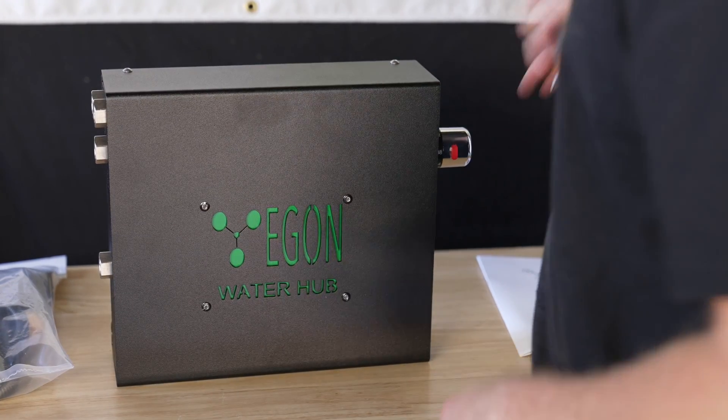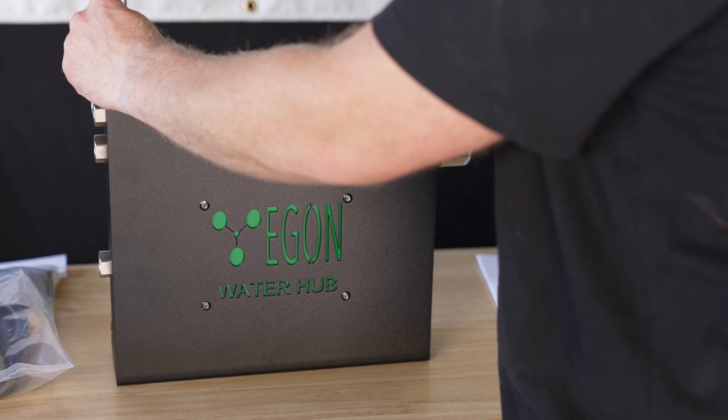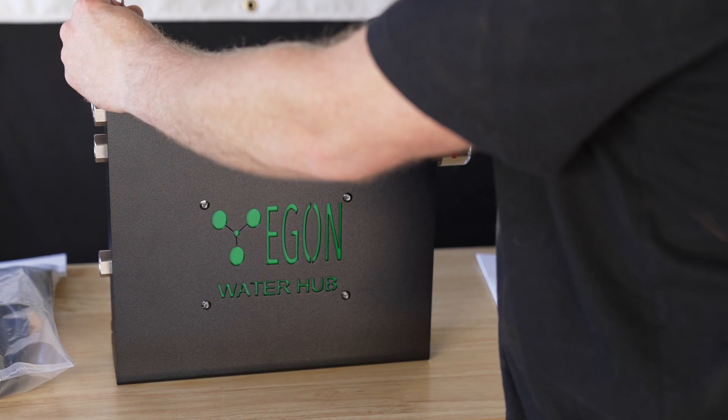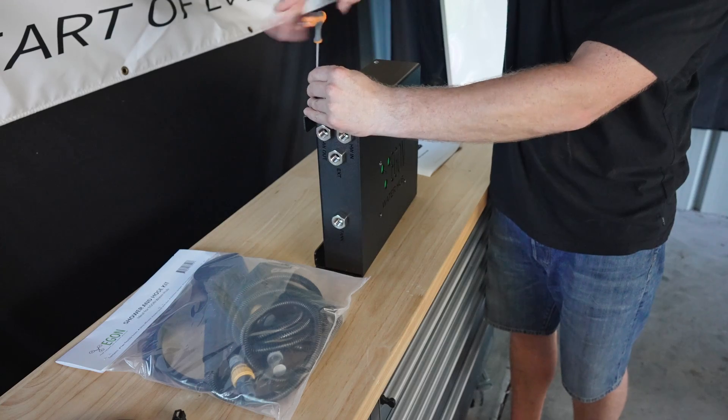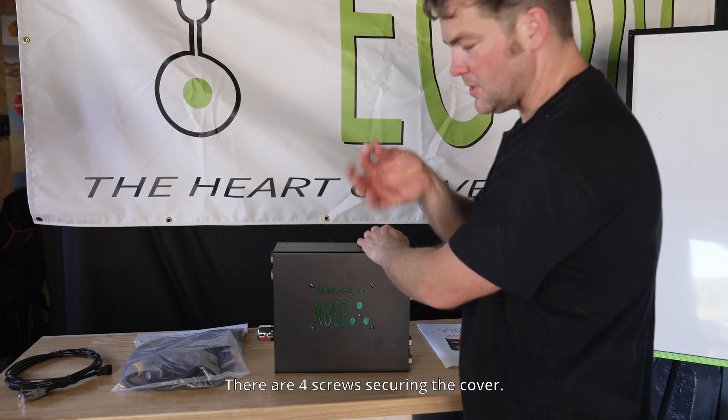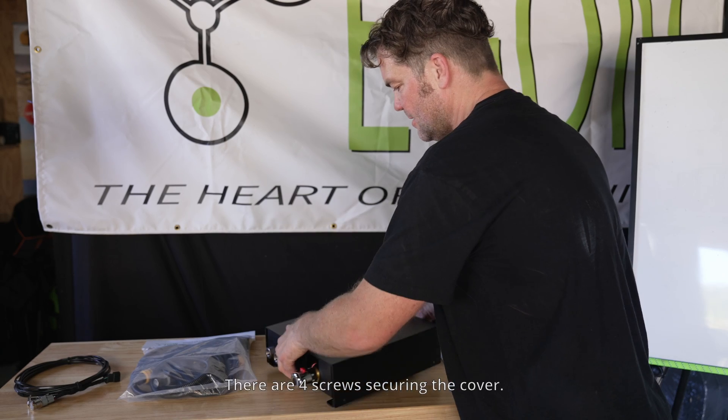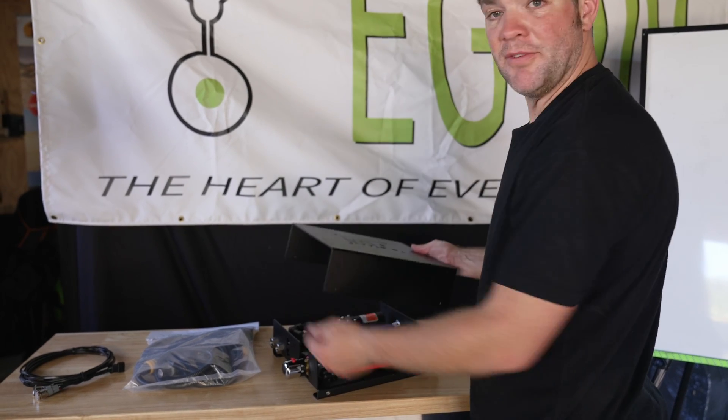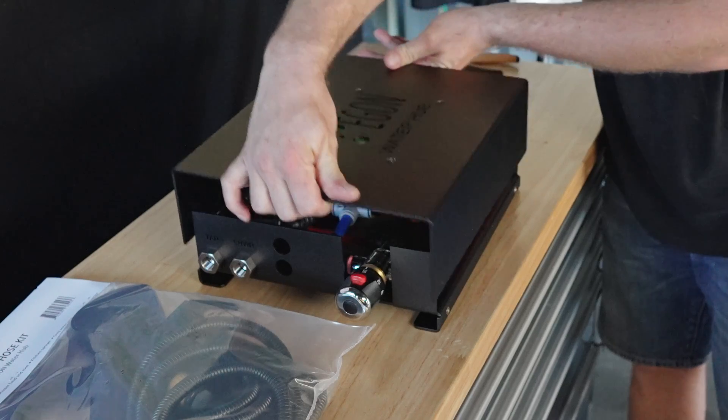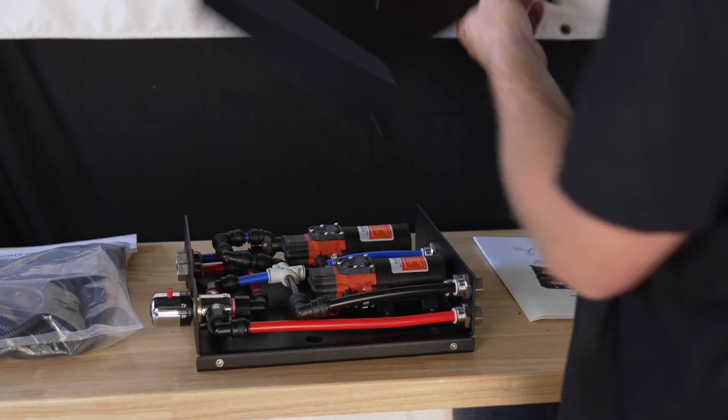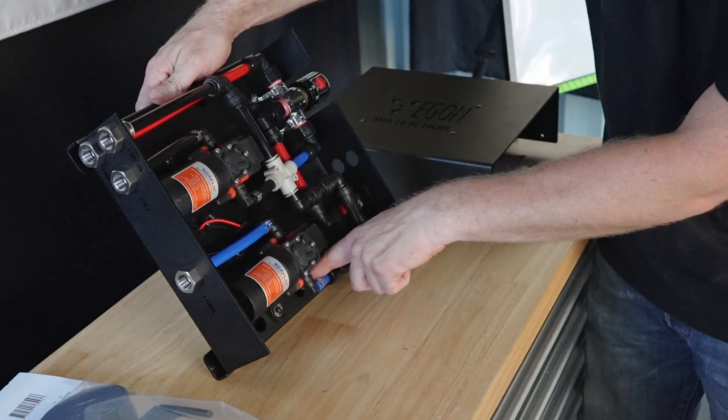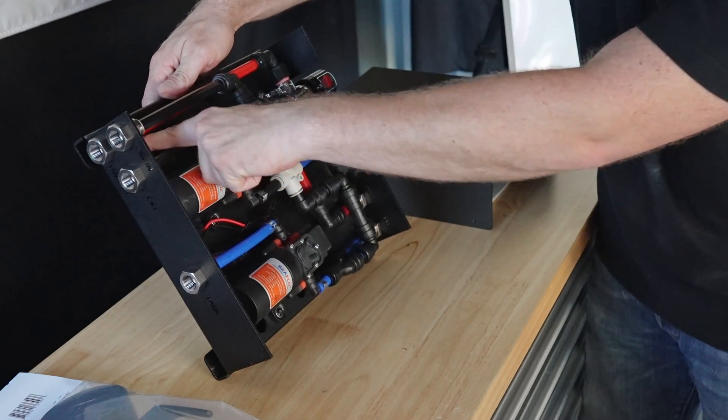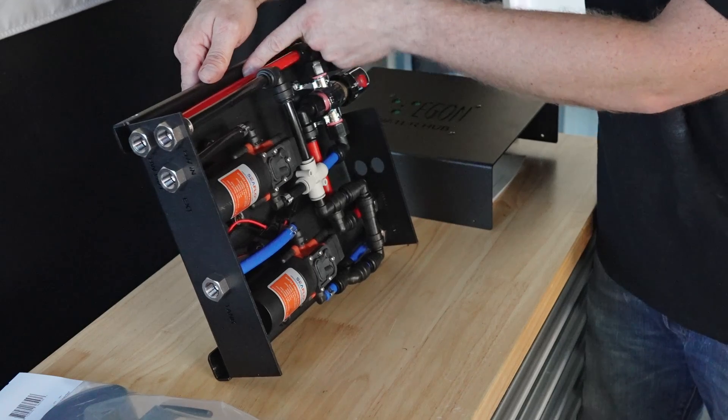I will open the housing now and show you how everything works. You've got two screws on the top and two screws on the bottom of this unit. Once these screws are removed you can take off the cover of the water hub. The cool thing is depending on which way around you want to mount this you can flip it around so the writing is always in the right orientation. To mount the water hub you've got different mounting holes.